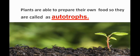Plants are able to prepare their own food, so they are called autotrophs — A-U-T-O-T-R-O-P-H-S. As we read in chapter number two, animals are called heterotrophs because they are unable to prepare their own food, but plants are different. Plants are able to prepare their own food. That's why they are called autotrophs.